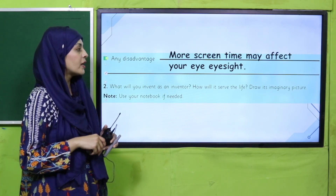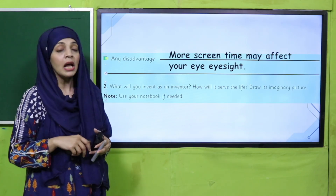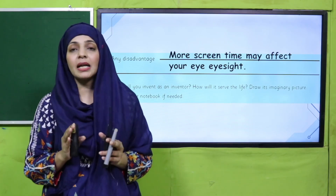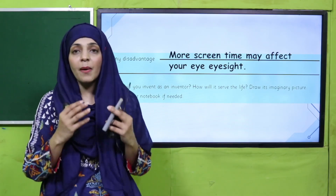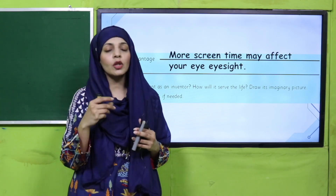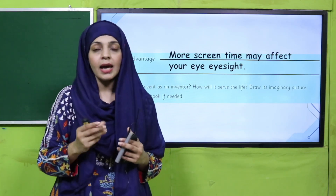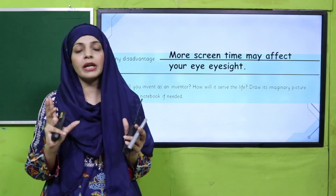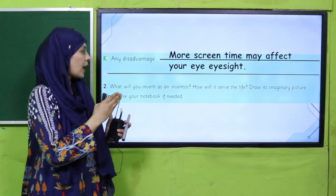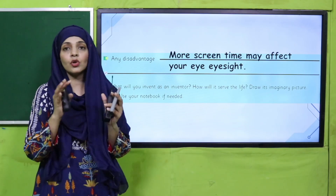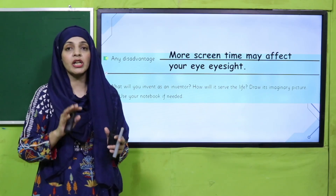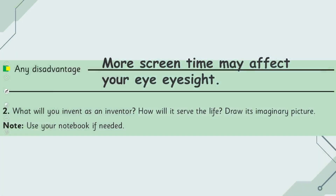What will you invent as an inventor? How will it serve life? Draw its imaginary picture. You need to tell us what you would like to invent, draw a rough picture of it, and color it. If there is not enough space, you can use your notebook for this project. Pause the video and finish it.